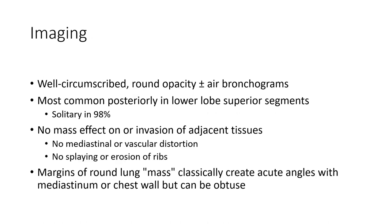On imaging, round pneumonia appears as a well-circumscribed round opacity, most commonly located posteriorly in the lower lobe superior segment, and is solitary in 98% of cases. There is no mass effect, no inversion of adjacent tissue, no major bronchovascular distortion, and no splaying or erosion of ribs. The round lung mass classically creates an acute angle with the major bronchus or chest wall, but this can be obscured.